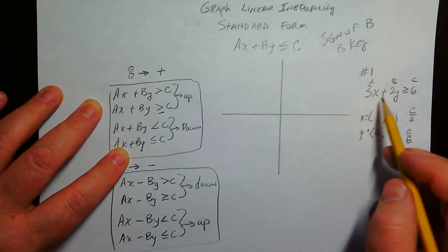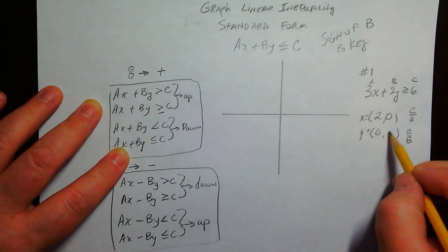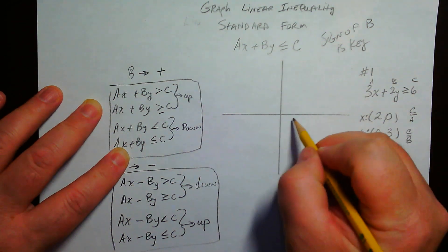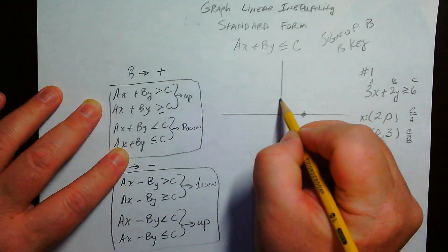So go ahead and figure out what your intercepts are. So 6 over 3 is 2, that's our x-intercept, and 6 over 2 is 3, that's our y-intercept. So you go ahead and plot those. There's the x, there's the y.